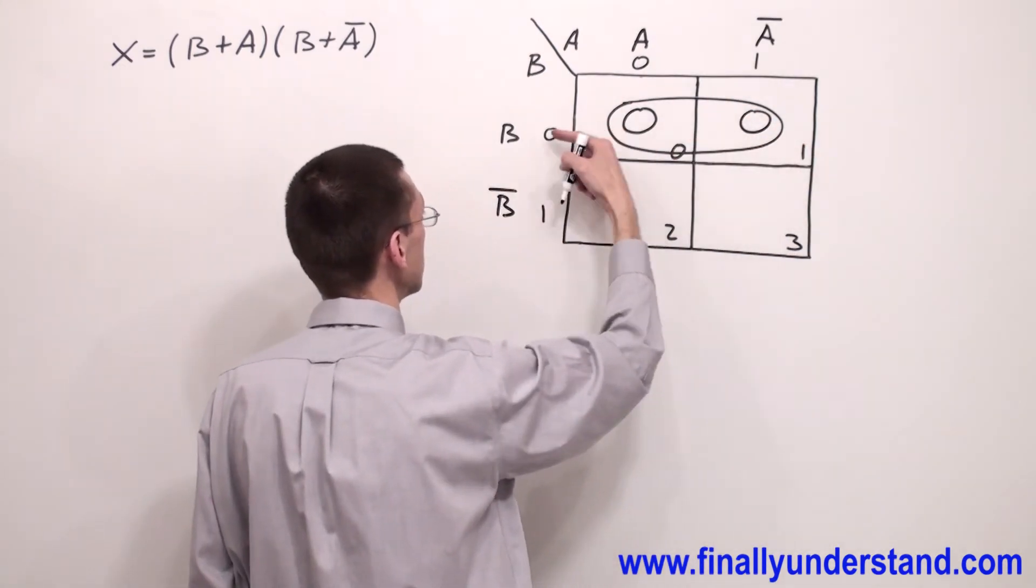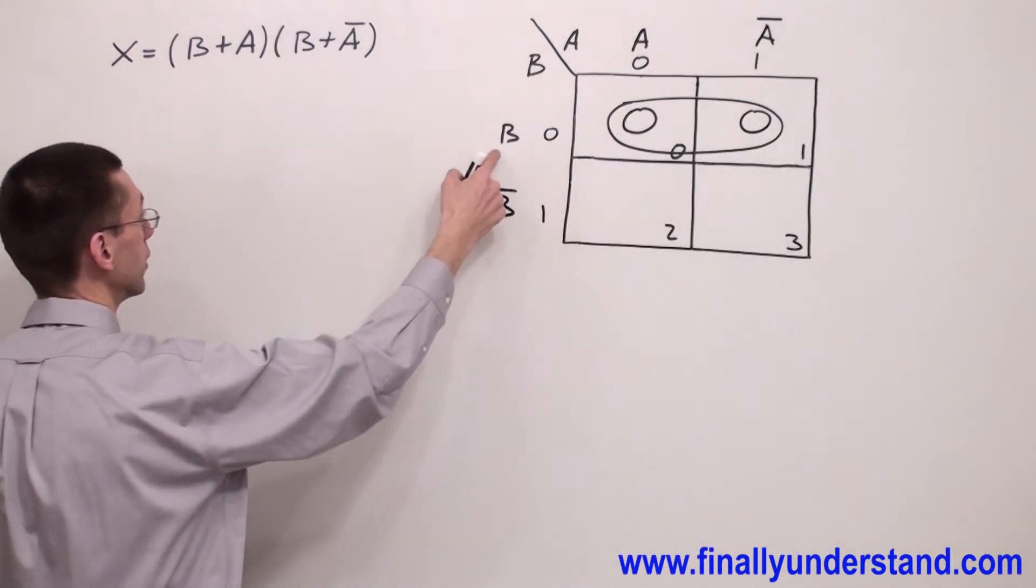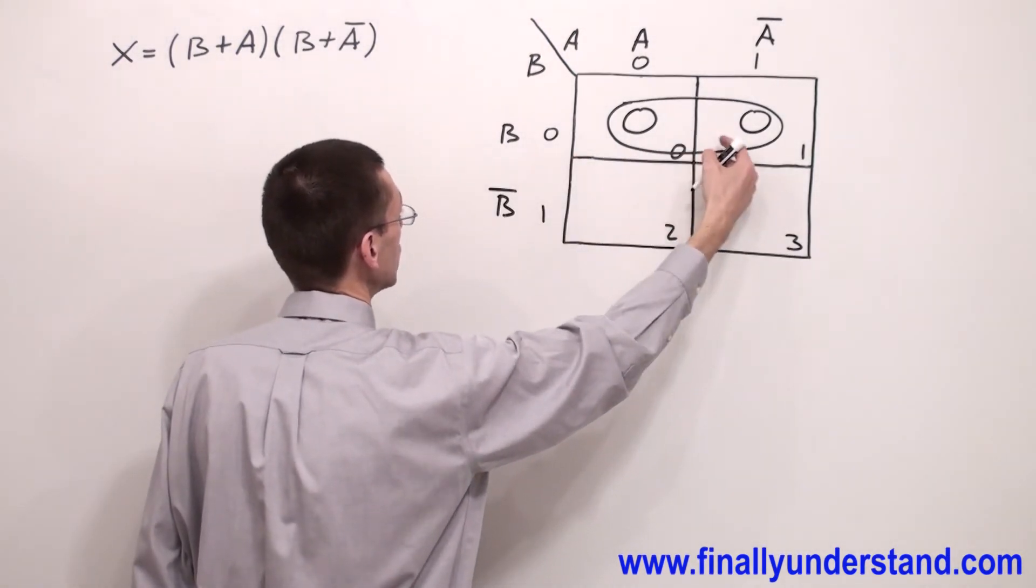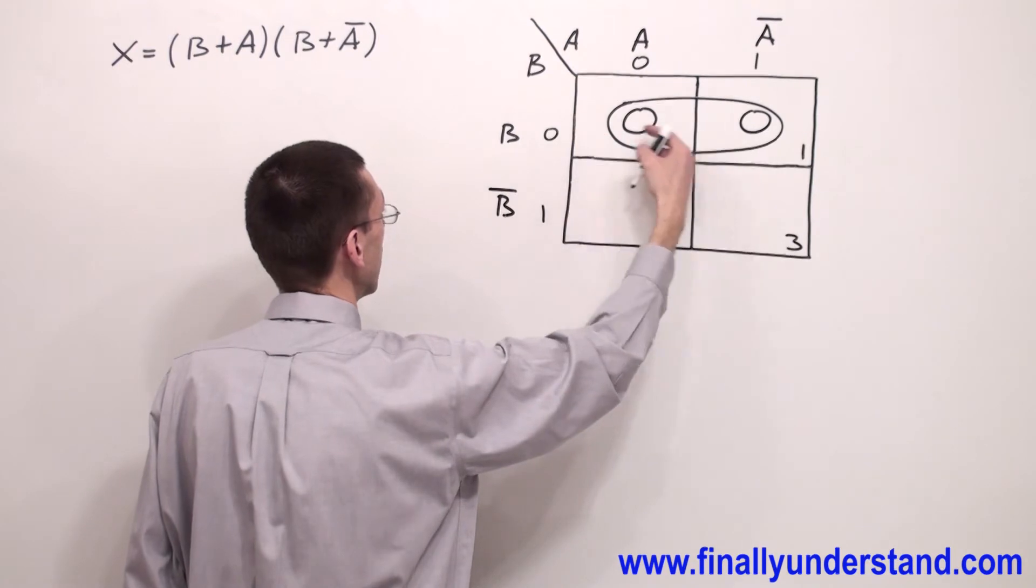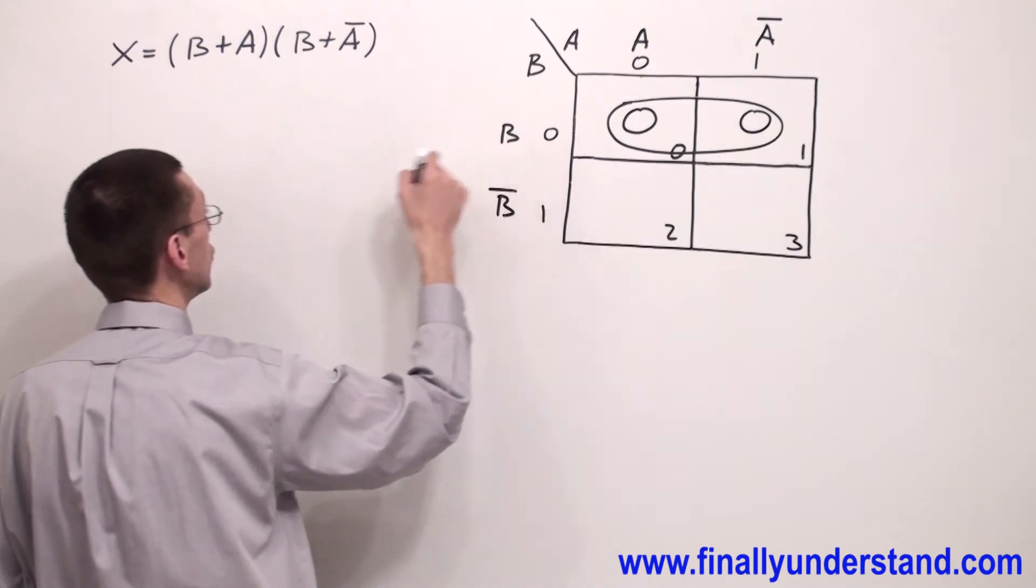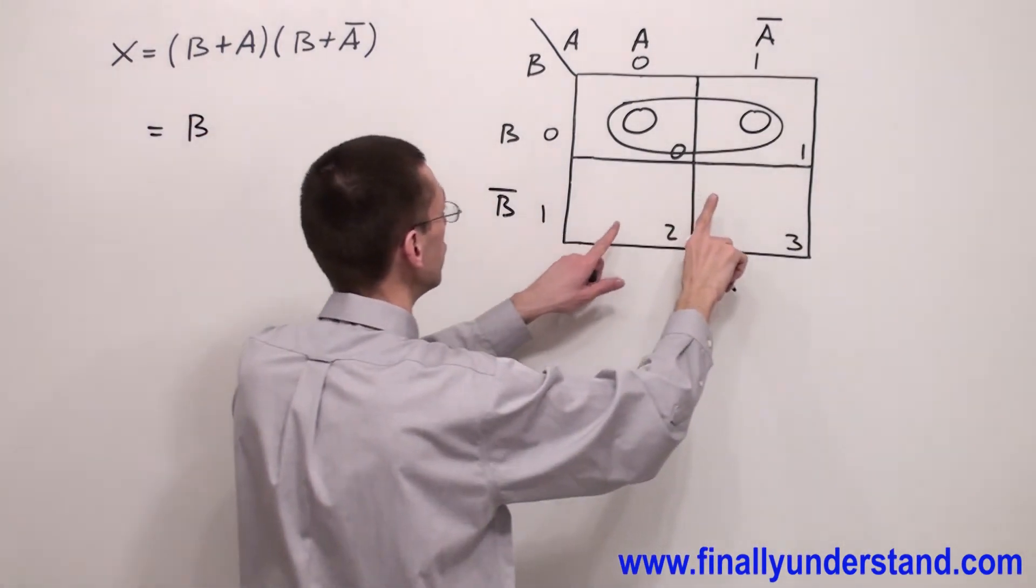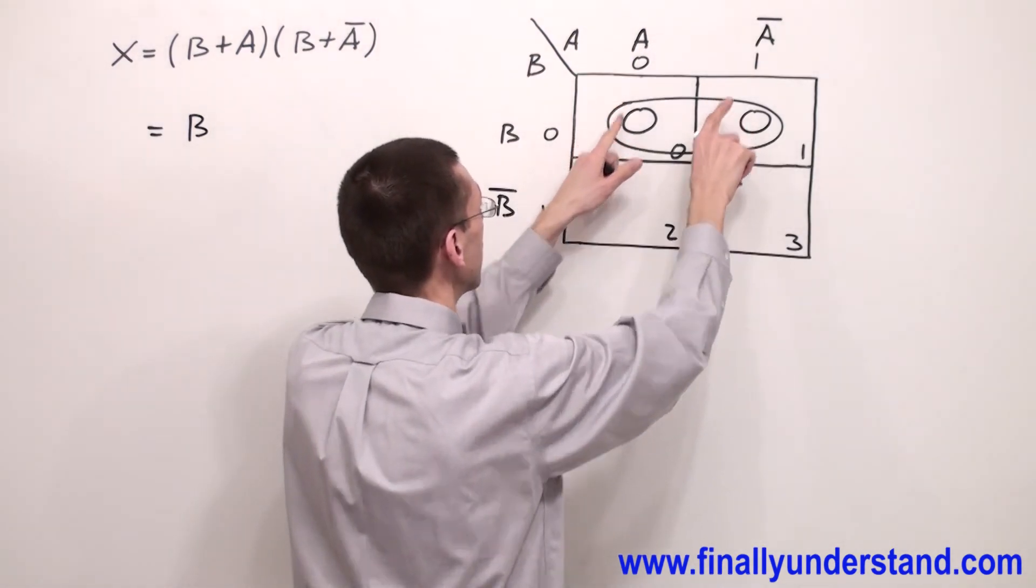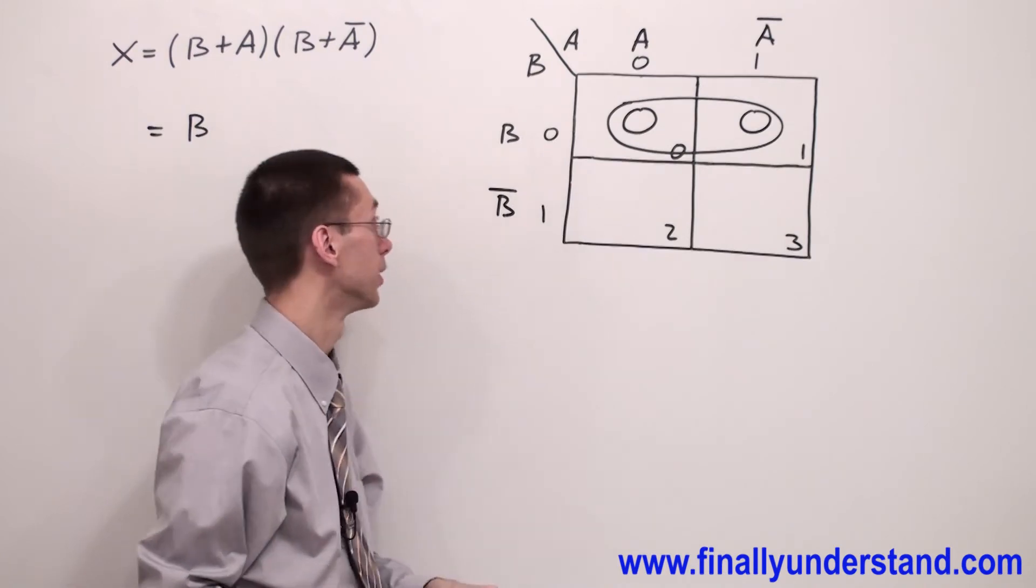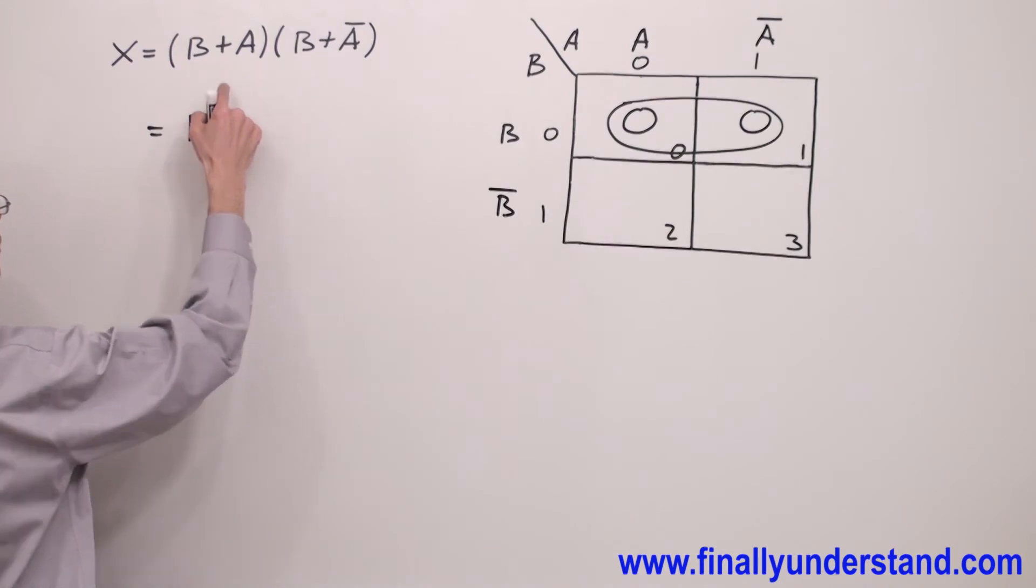So on the left side of my row I'm going to have B. Remember, anytime I have a group placed in one row I simply copy down whatever is on the side of that row. At the top of these two columns I have complements. Any time I have complements I simply ignore them. That's why this is the simplified Boolean expression.